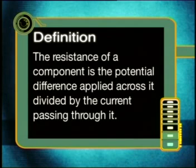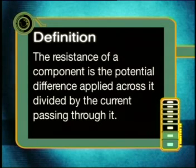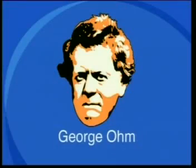I'm now going to define resistance — this is an important concept, so please make sure that you learn it. The resistance of a component is the potential difference applied across it divided by the current passing through it. The relationship between potential difference, current, and resistance is very helpful in designing a circuit or an appliance. George Ohm was the first scientist to investigate this relationship.